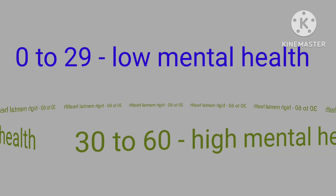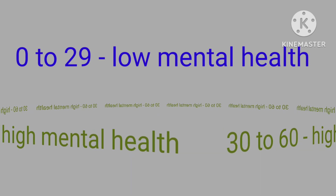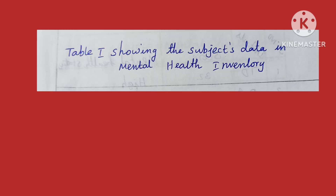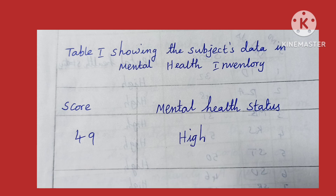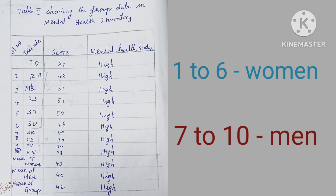After giving marks, we have to total the marks. A score of zero to twenty indicates low mental health, and thirty-two to thirty-six indicates high mental health. We should write the scoring point and mental health status of the subject in Table One.